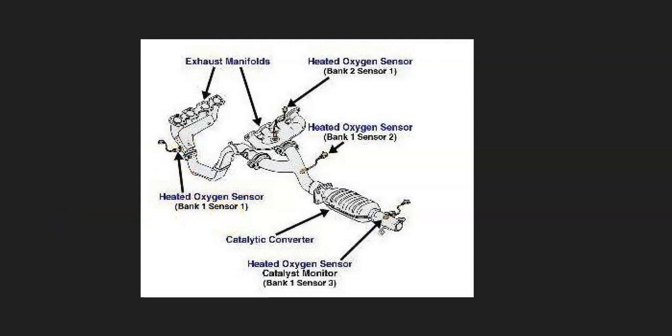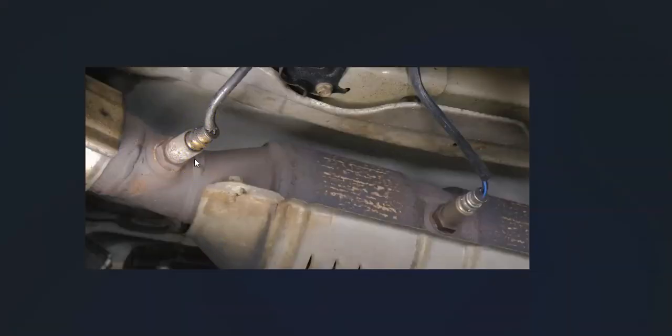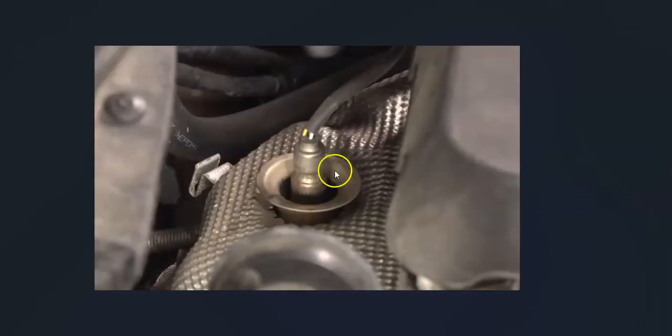The basics of what's going on with these is that sensor one is also called the upstream oxygen sensor. It's located before the catalytic converter, and sensor two is also called the downstream oxygen sensor and it's located after the catalytic converter.